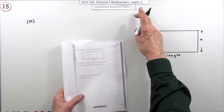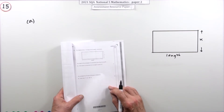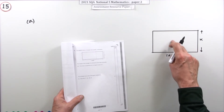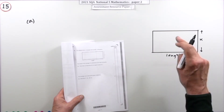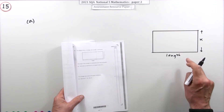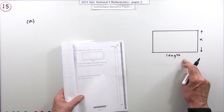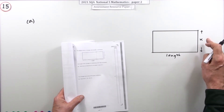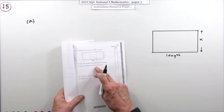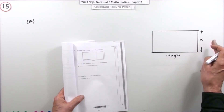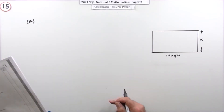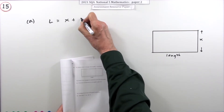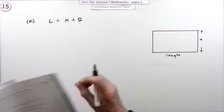Number 15, from paper two of the 2021 National Five resource paper — a seven mark question. There's some mathematical modelling: you've got a rectangle whose length is always five more than its breadth. Since they're related, you just need a variable for one of them. Write down an expression for its length in terms of its breadth — just one mark. The length will be the breadth plus five.